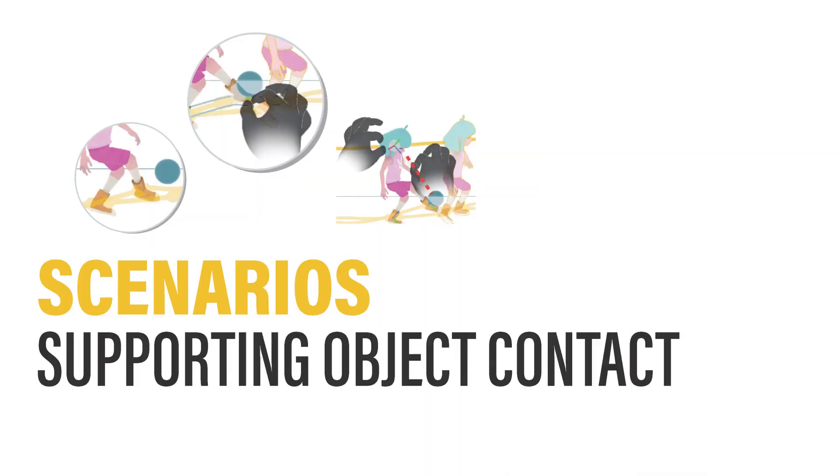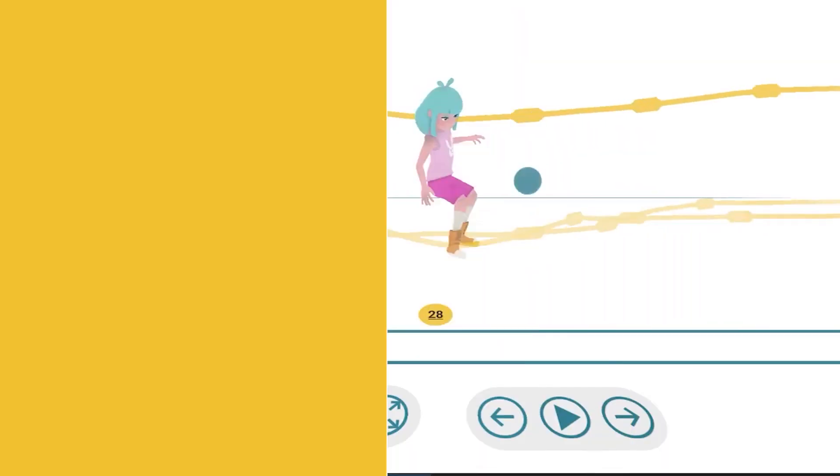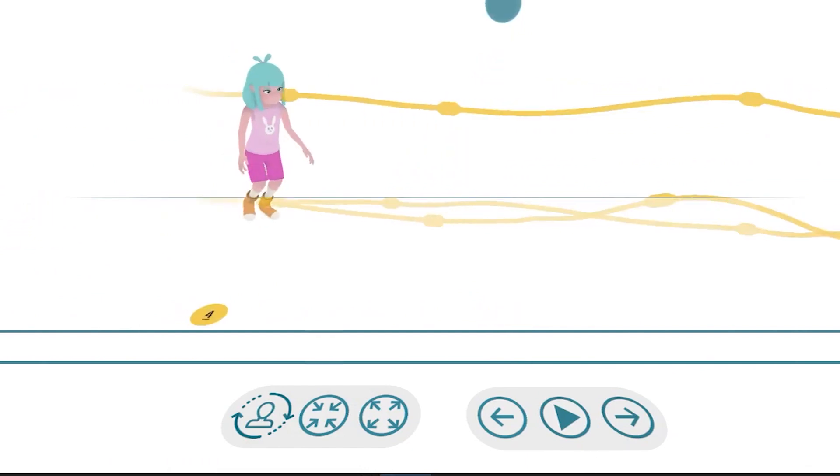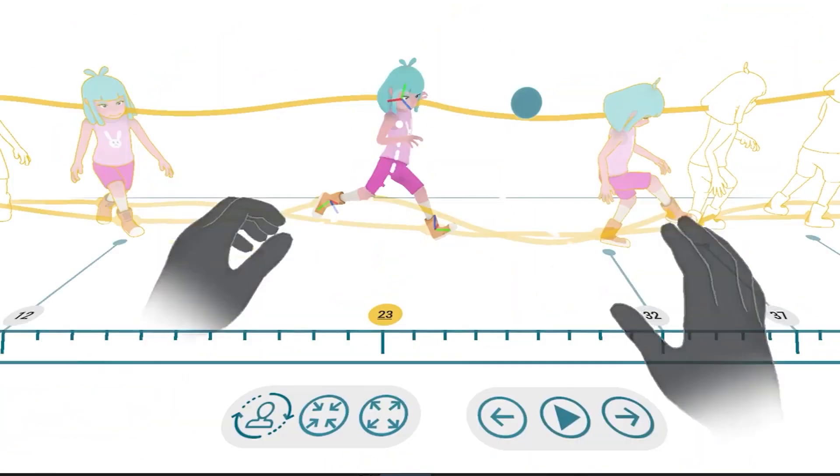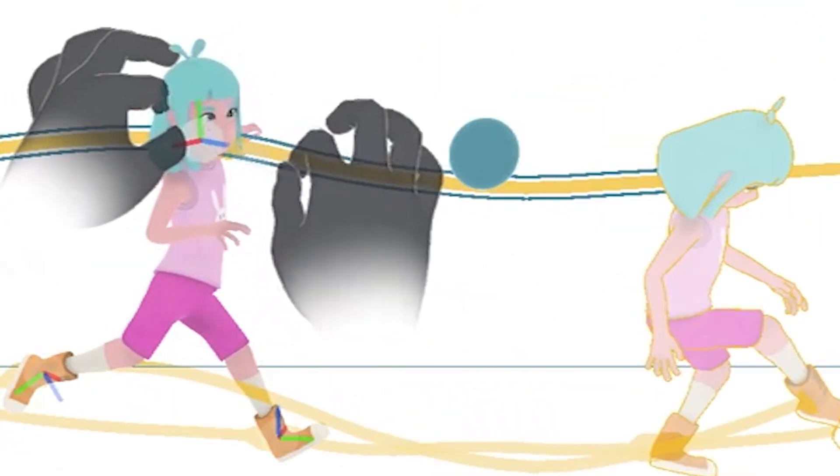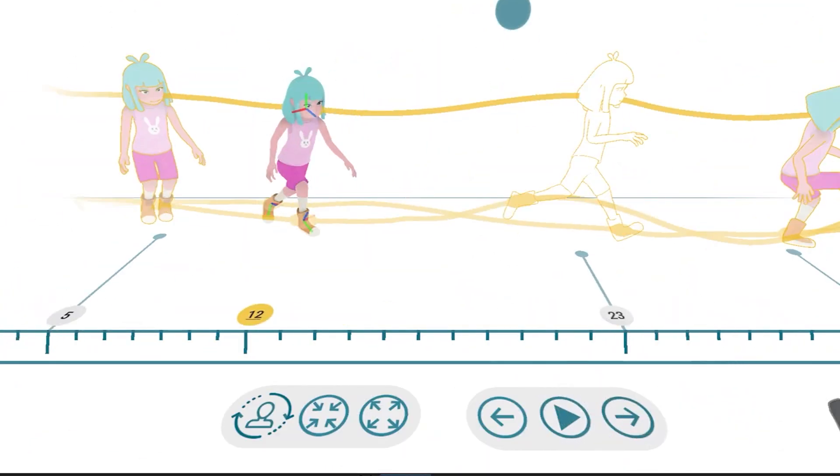Next, we show how we can support object contact. In this clip, the character is supposed to kick a ball, but fails to hit it. One can adjust the position of the foot and make other changes so the character kicks it. They can also make finer adjustments so that the character looks at the ball.